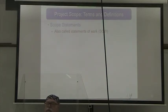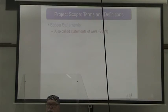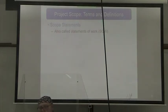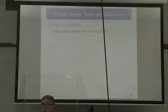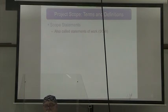Usually when we talk about project scope, we have a scope statement called the Statement of Work, or SOW. Our scope statement is our guiding star — we have to put everything in it while still keeping it as short as possible. We want it to be something people can read and understand exactly what the project is about, but not so long that they fall asleep in the middle.